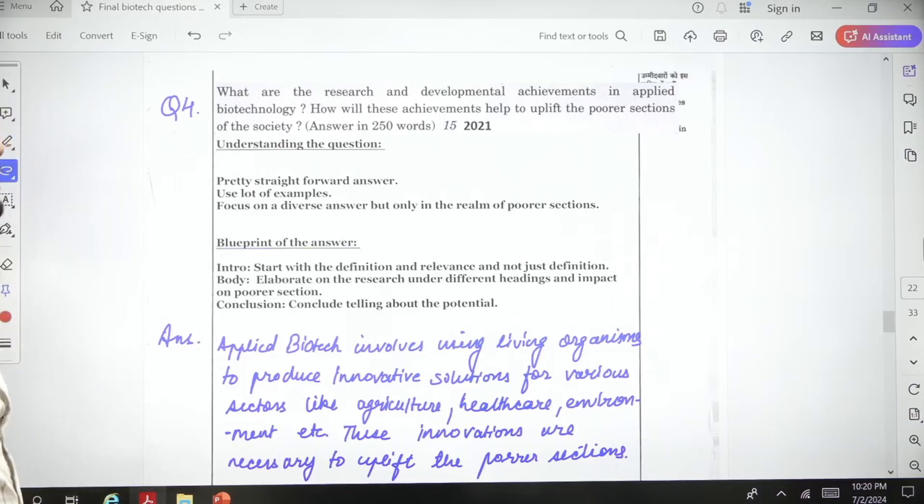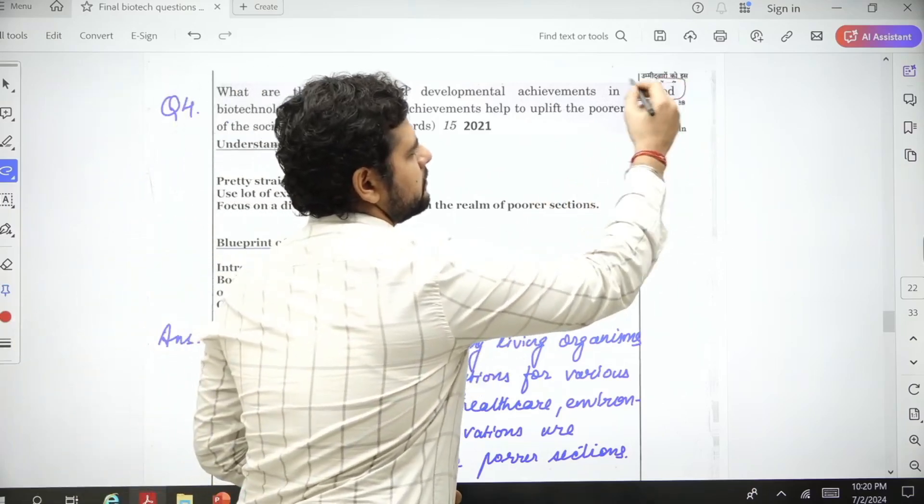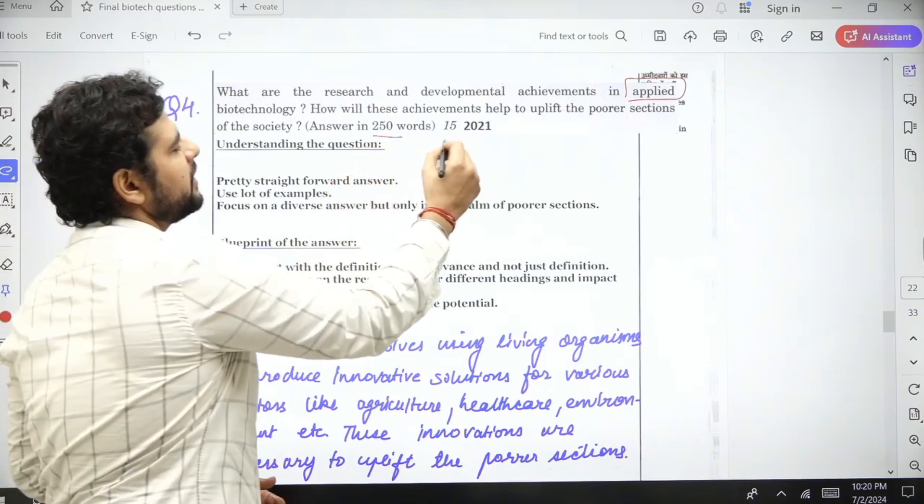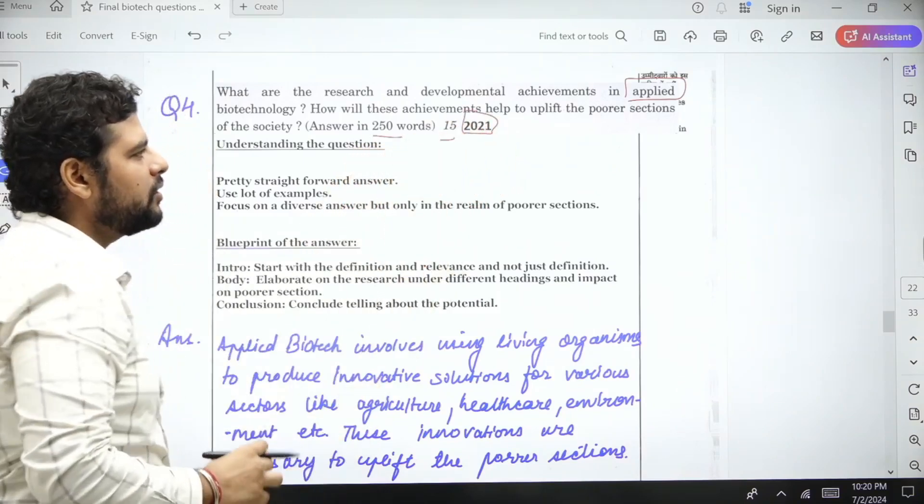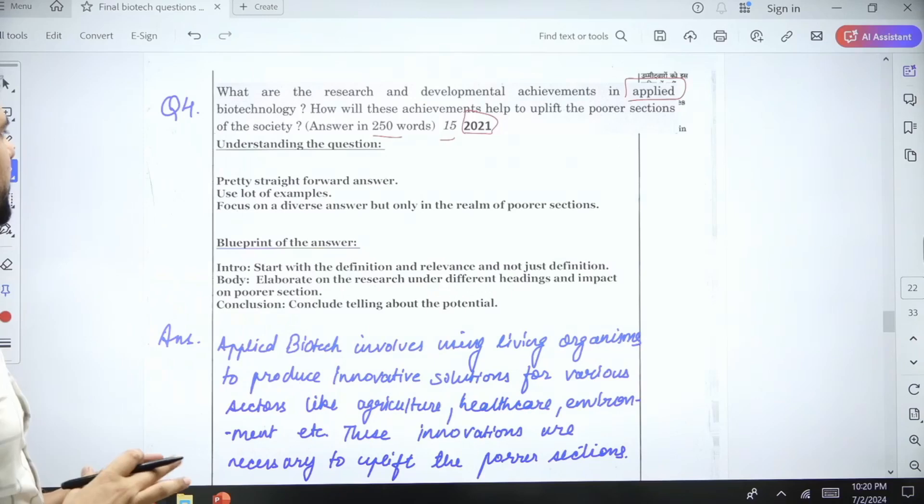The next question, number four: What are the research and developmental achievements in applied biotechnology? How will these achievements help to uplift the poorer sections of the society? 250 words, 15 marks, 2021. Now this question again goes very specific, very specific.